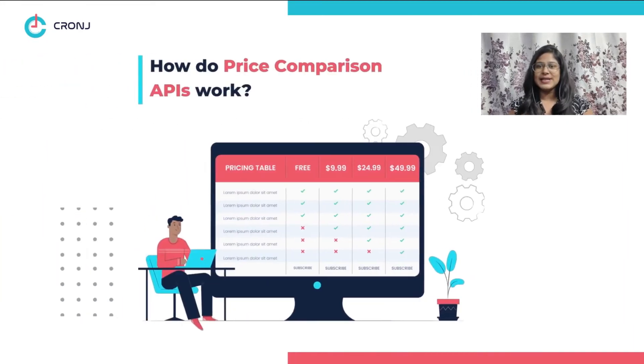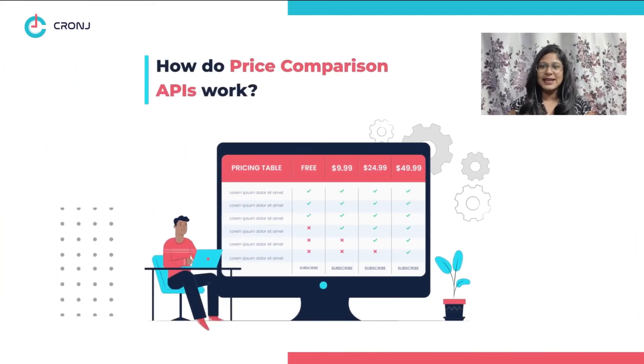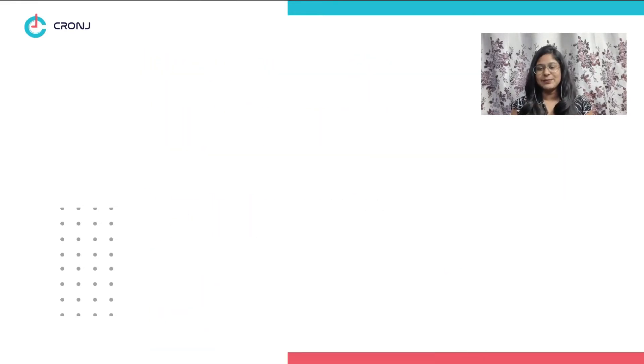So, how do these APIs collect information from various sites and present it as per your request? These APIs work in three main stages.